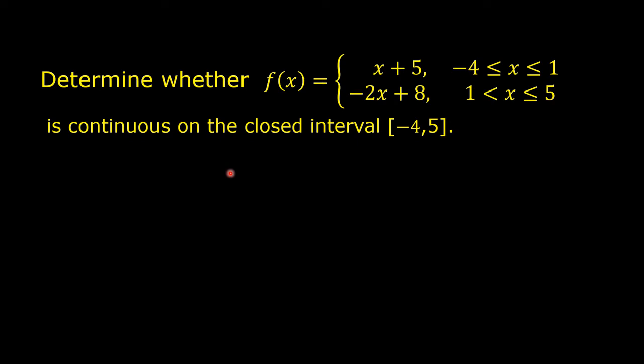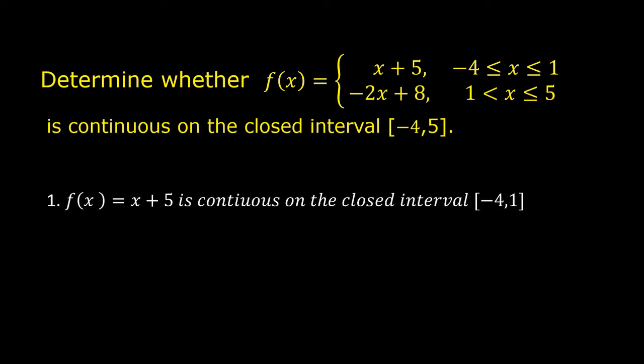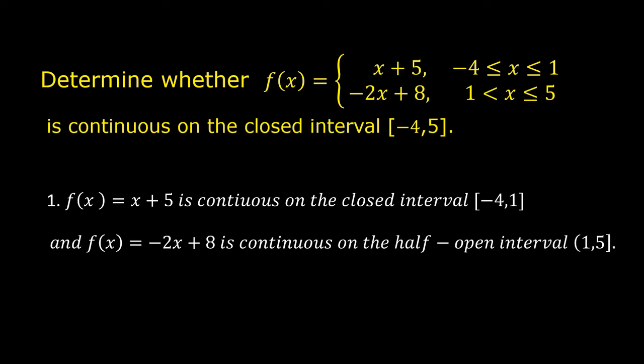A polynomial function is continuous at every real number. The polynomials in this given function are continuous on their respective intervals. f of x equals x plus 5 is continuous on the closed interval negative 4 to 1, and f of x equals negative 2x plus 8 is continuous on the half-open interval (1, 5].